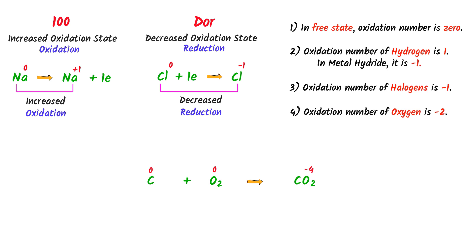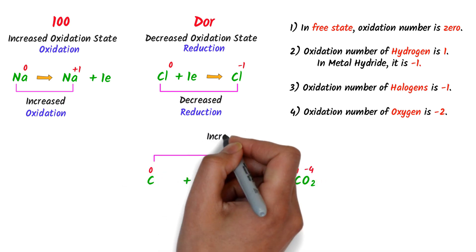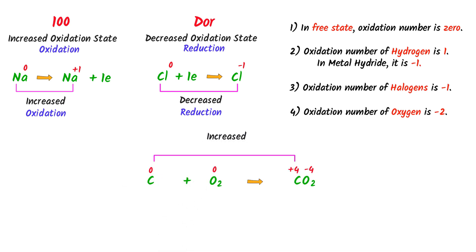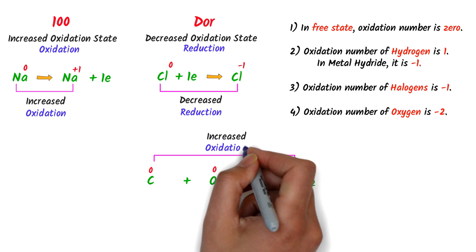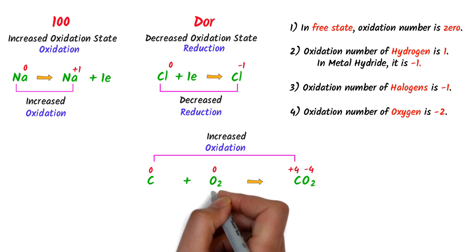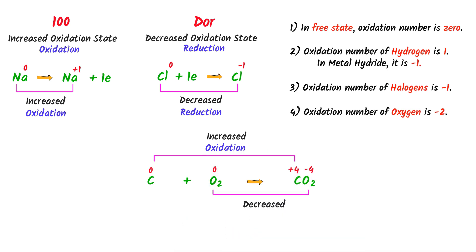Since carbon dioxide is a neutral molecule, the oxidation state of carbon must be positive four. We can see that the oxidation state of carbon increases from zero to positive four, so it is oxidized. The oxidation state of oxygen decreases from zero to negative four, so it is reduced. Therefore, oxidation and reduction both take place in this reaction, so it is a redox reaction.